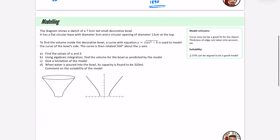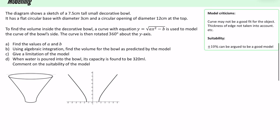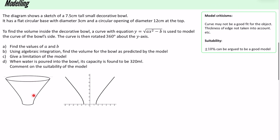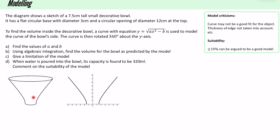Now for the modelling questions. The diagram shows a sketch of a 7.5 cm tall small decorative bowl. It has a flat circular base with diameter 3 cm and a circular opening of diameter 12 cm at the top. To find the volume inside the bowl, a curve with equation y = √(ax² − b) is used to model the curve of the bowl's side. The curve is then rotated 360° about the y-axis.